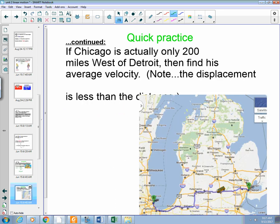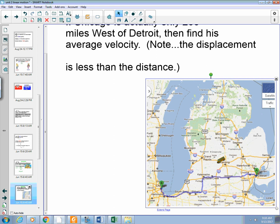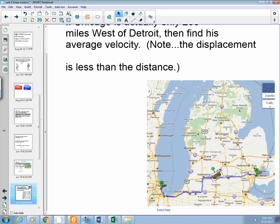But, it turns out Chicago is slightly closer than that 300 miles. So, if we could draw a straight line from Detroit all the way to Chicago, it would only be 200 miles. But, we can't do that. We can't travel that way because there's something in the way. There is a large lake.